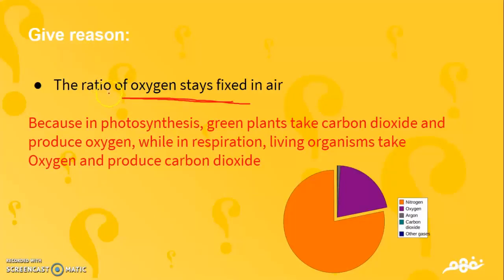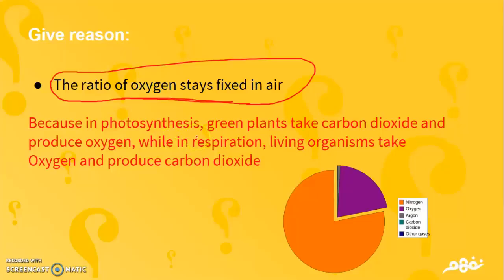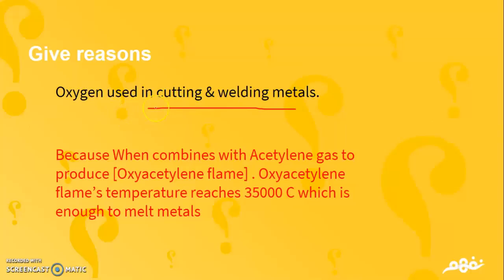Give reason: The ratio of oxygen stays fixed in the air. Because in photosynthesis, green plants take carbon dioxide and produce oxygen. On the other hand, in respiration, living organisms take oxygen and produce carbon dioxide — this balance keeps the oxygen ratio fixed at 21%. Another question: Oxygen is used in cutting and welding metals. Because when oxygen combines with acetylene gas, it produces an oxy-acetylene flame whose temperature reaches 35,000 degrees Celsius, which is used to melt any metals.